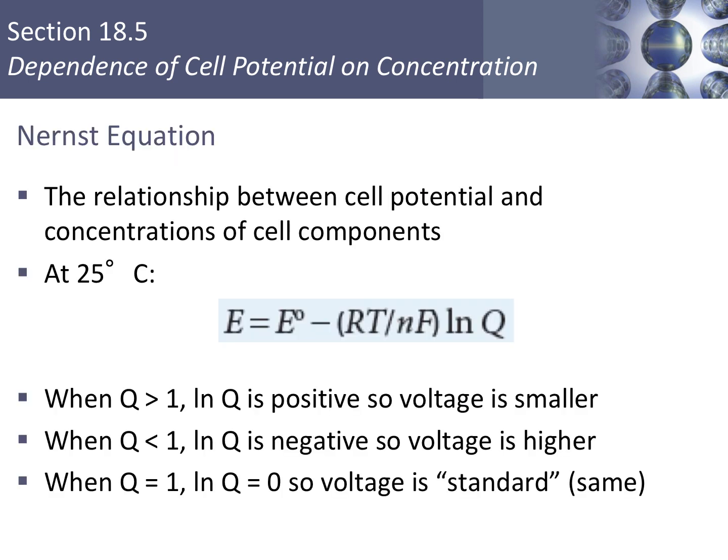If you want to be more quantitative about what your cell potential would be after changing concentrations, you can use the Nernst equation. This equation is in your reference packet. However, you will not be required to calculate with it — you can use it more qualitatively to discuss increases or decreases in voltage.